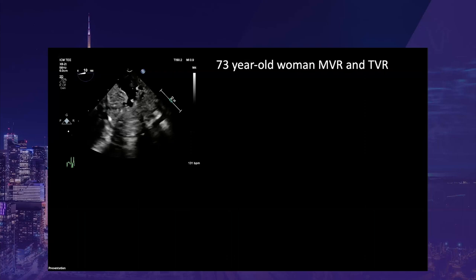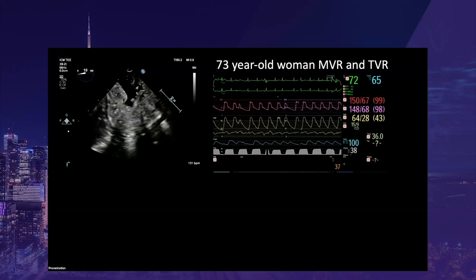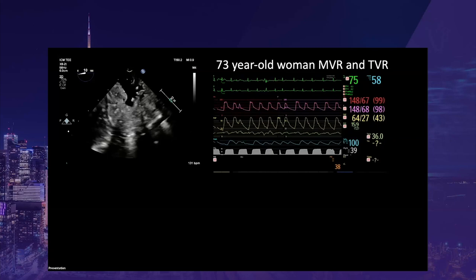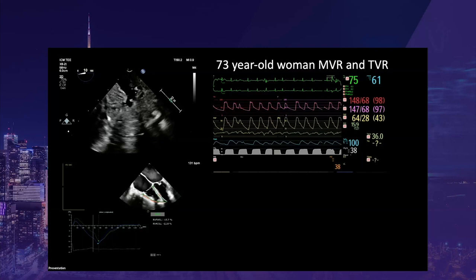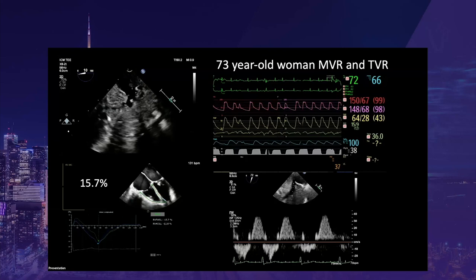This case demonstrates how we can integrate all this information. A 73-year-old woman with heart failure secondary to mitral and tricuspid regurgitation was referred for mitral and tricuspid valve replacement. The stomach appears severely edematous on transgastric view secondary to venous congestion. Pulmonary hypertension is present on the pulmonary artery curve, and central venous pressure is elevated with a permanent V-wave. On mid-esophageal four-chamber view, both atria are dilated and RV dysfunction is present with RV free-wall strain of −15.7%. Accordingly, hepatic vein Doppler is compatible with severe TR and RV dysfunction, with the S-wave completely reversed.